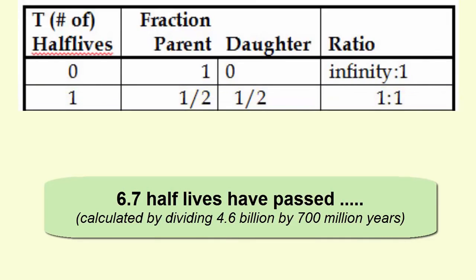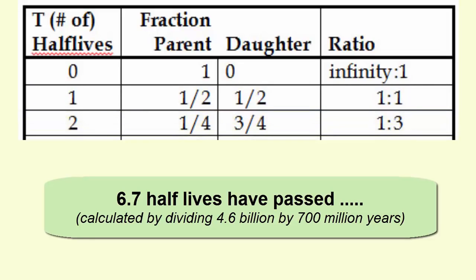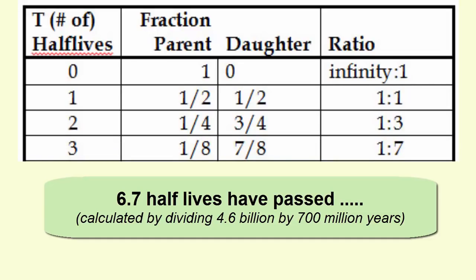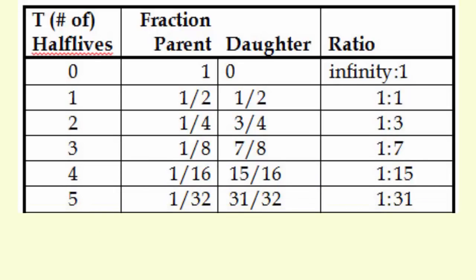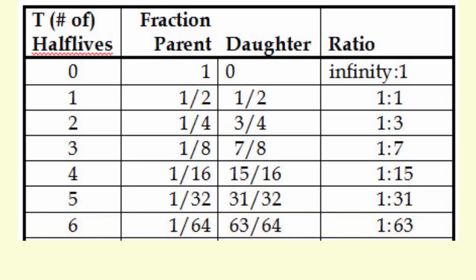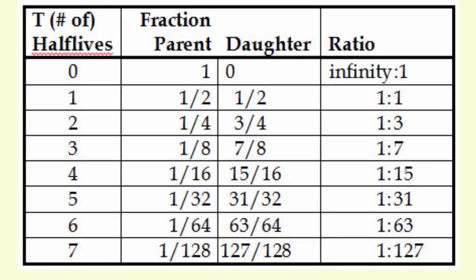1 half-life gives a ratio of 1 to 1. 2 half-lives: a quarter parent to 3 quarters daughter, or 1 to 3. 3 half-lives: 1 eighth to 7 eighths, or 1 to 7. 4 half-lives: 1 sixteenth to 15 sixteenths, or 1 to 15. 5 half-lives: 1/32 to 31/32, or 1 to 31. 6 half-lives: 1/64 to 63/64, or 1 to 63. And 7 half-lives: 1/128 parent to 127/128 daughter, or 1 to 127.